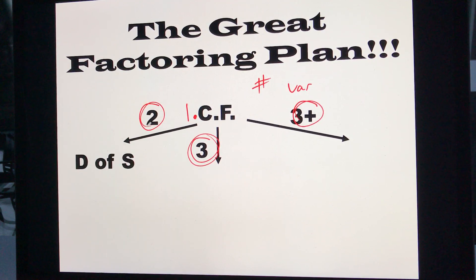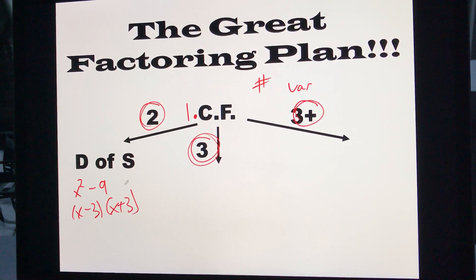If it's a binomial, we're going to do a difference of squares. It's something like x squared minus 9, where we know it just becomes x minus 3, x plus 3. That's it. That's difference of squares.